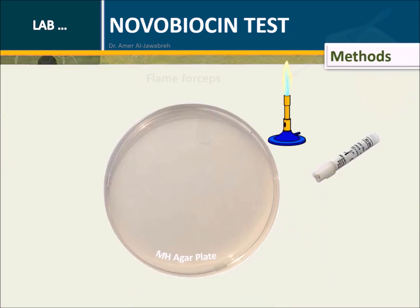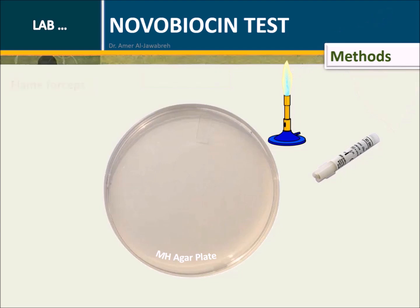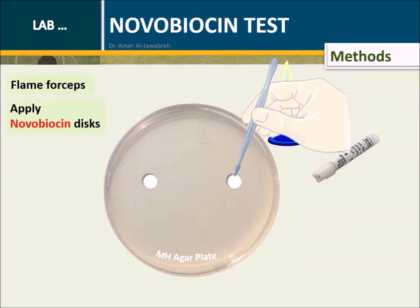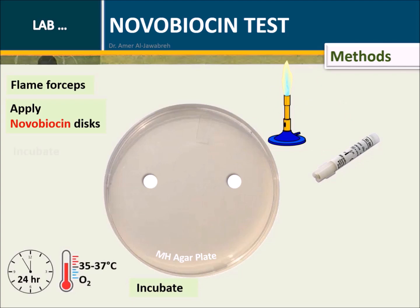Methods, under aseptic technique: Apply two disks of 5-microgram novobiocin and press gently. Incubate aerobically at 35 to 37 degrees centigrade for 24 hours.